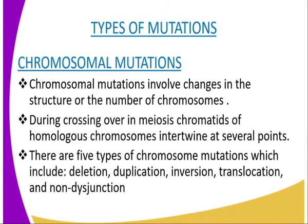Chromosomal mutations involve changes in the structure or number of the chromosomes. During crossing over in meiosis, chromatids of homologous chromosomes intertwine at several points called chiasmata. Breaking of chromosomes at the chiasmata creates plenty of opportunity for various changes on the chromatids, leading to chromosome mutation.